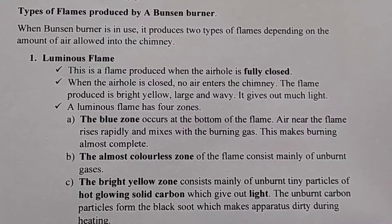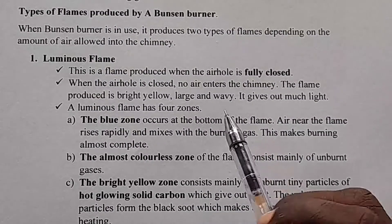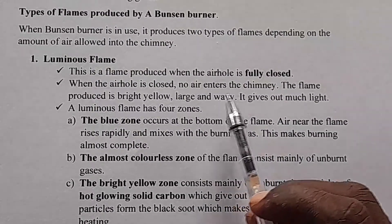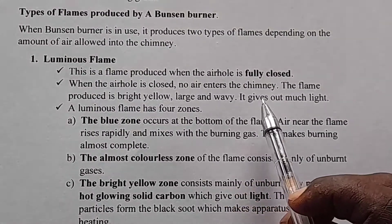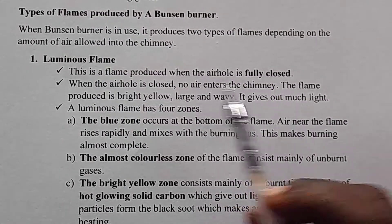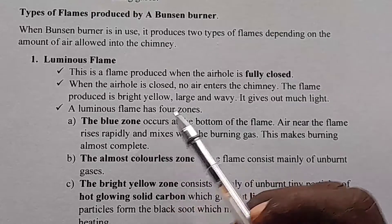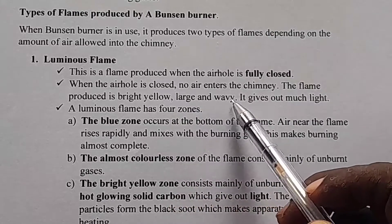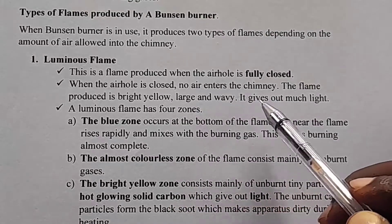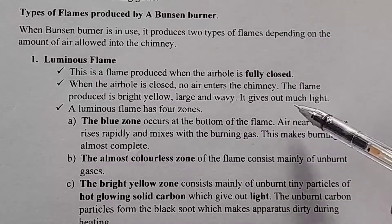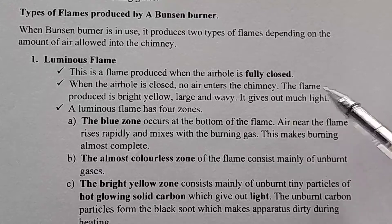When the air hole is closed, no air enters the chimney. The flame produced is bright yellow, large, and also wavy. It gives out much light.